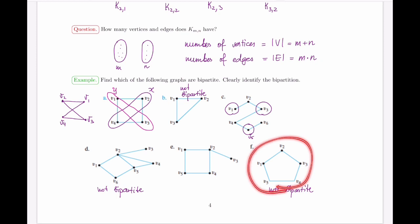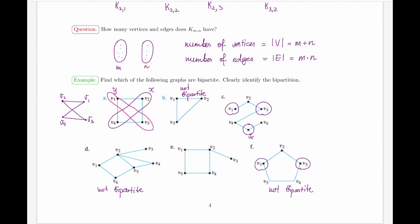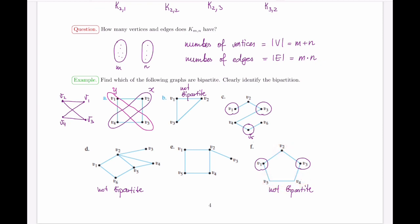For a cycle, the structure is very symmetric. Put v1 into part X. Then v2 and v5 cannot be in X since they're adjacent to v1. The next vertex for X is v3, which forces v4 out of X as well. This leaves v2, v4, and v5 together in Y — but some of these are connected by an edge, so we're stuck.